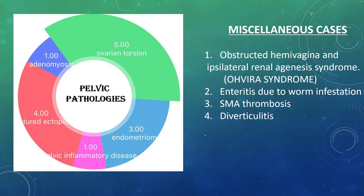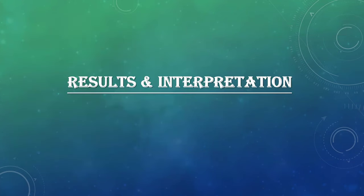The 4 miscellaneous cases were: obstructive hemivagina and ipsilateral renal agenesis syndrome; enteritis due to Ascariasis worm infestation; superior mesenteric artery thrombosis — an echogenic thrombus was seen in the superior mesenteric artery on ultrasound; and fourth, diverticulitis.